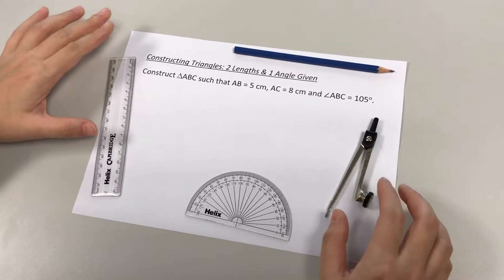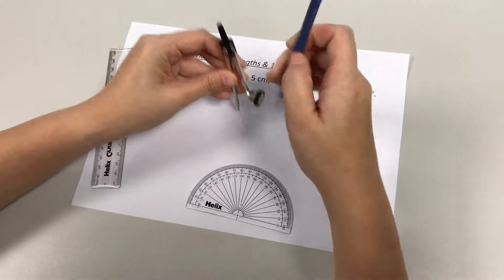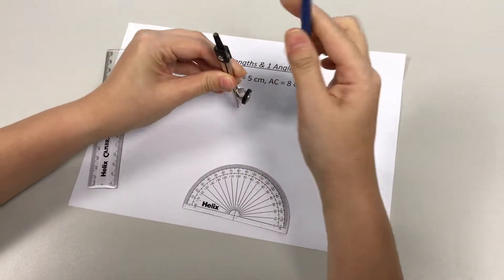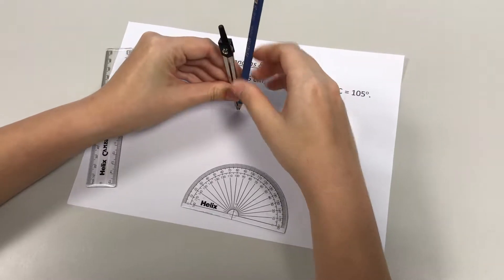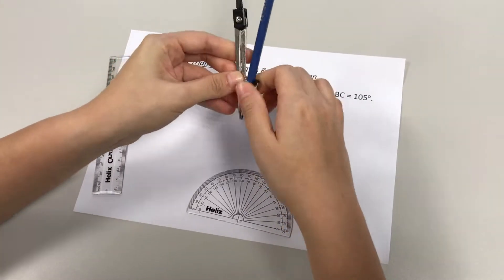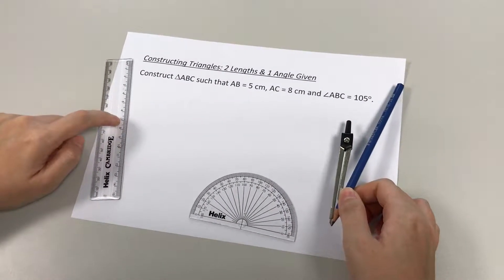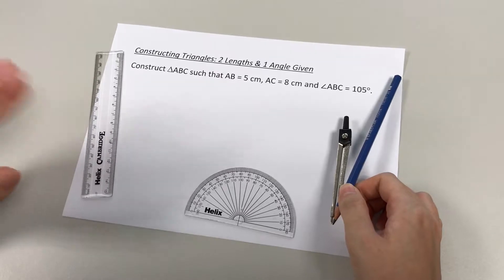Before that, please make sure you have all the equipment that you need. Get your compass ready by placing the pencil through and screwing the knot. Now we have our compass, protractor, and ruler. These are the items you'll always need whenever you're drawing triangles.